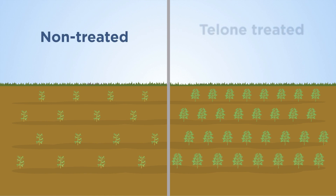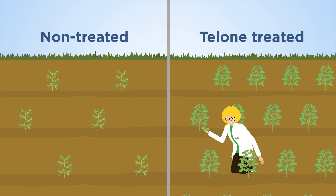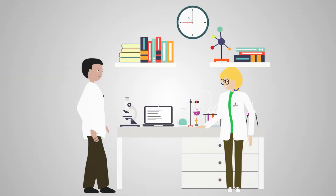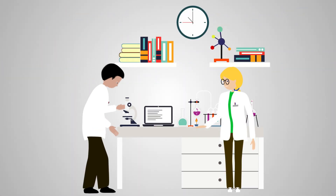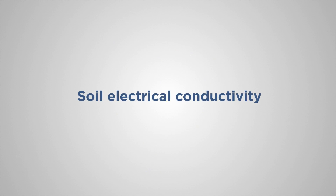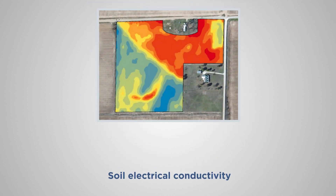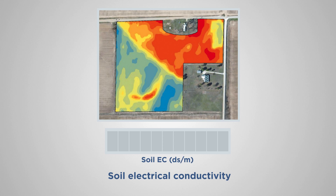A study was conducted in the southern U.S. comparing strips of soybean, either non-treated or Telone-treated, with or without a seed-applied nematicide. Using two different nematicides enabled the team to determine their relative effectiveness. Electrical conductivity was used to create soil texture maps. Electrical conductivity primarily measures soil salt concentrations, which are strongly related to soil texture.